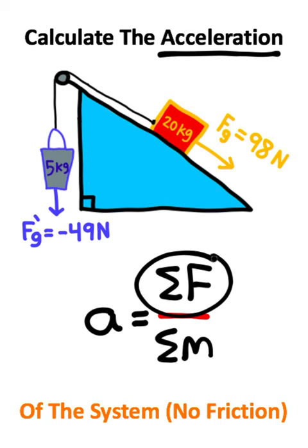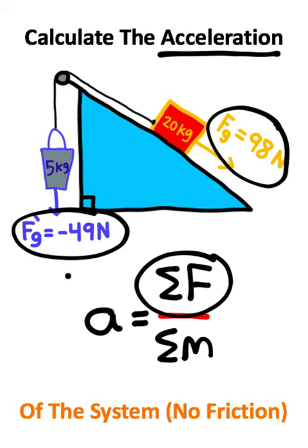Now the total force of the system is going to be the 98 Newton force minus the 49 Newton force, because we have a negative opposing force, so we have to subtract the two.